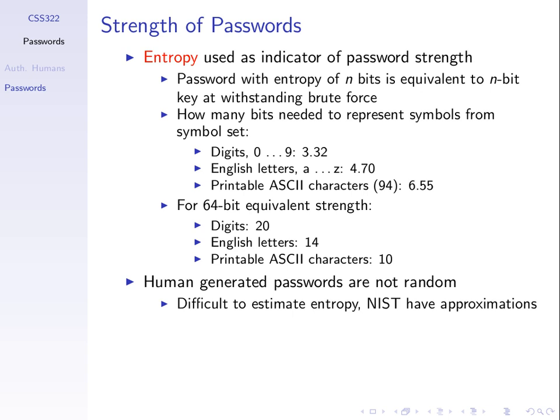Entropy is used for the same thing — it just converts the number of attempts to a smaller value by taking the logarithm. Log base 2 of 10,000 gives an entropy of 13.28. 2 to the power of 64 attempts is equivalent to an entropy of log base 2 of 2 to the power of 64, which is 64. So entropy is just another way to compare the security of passwords on a different scale than the number of attempts.